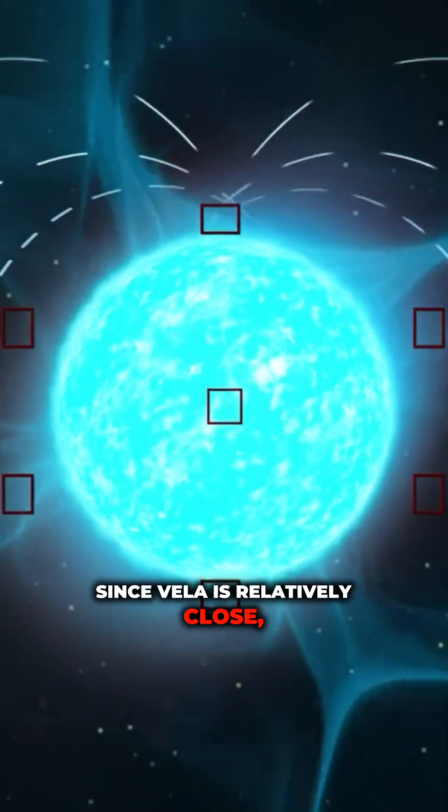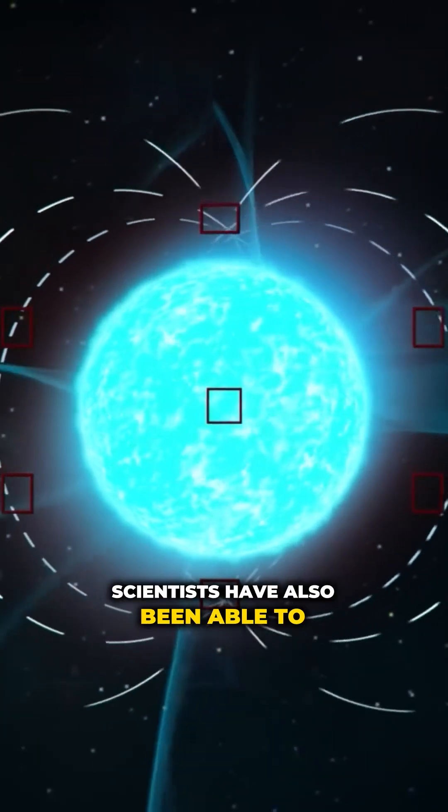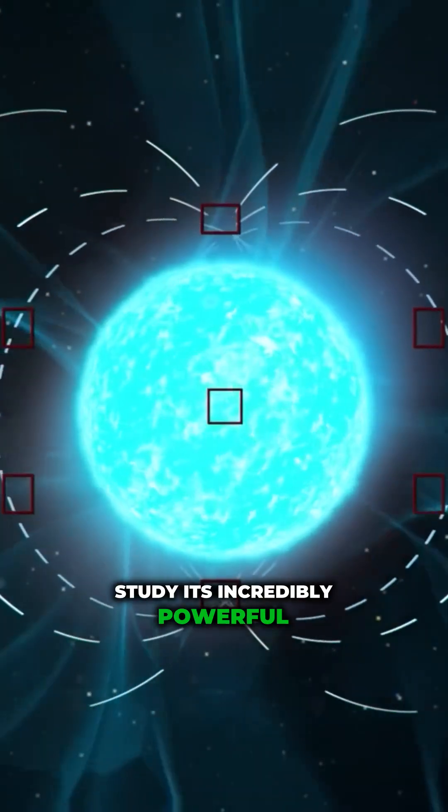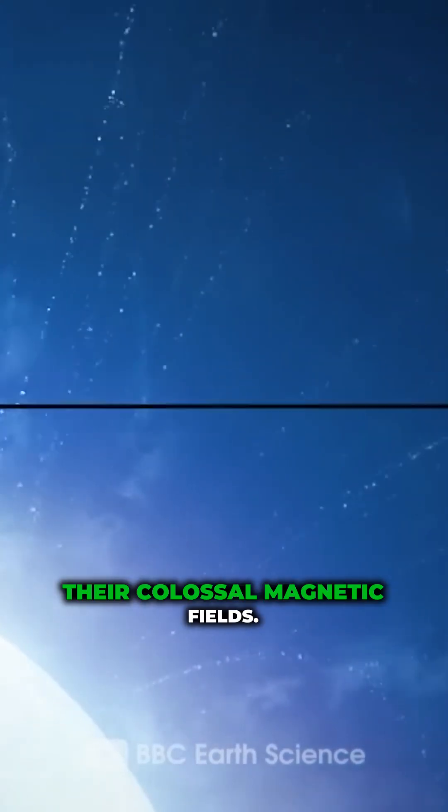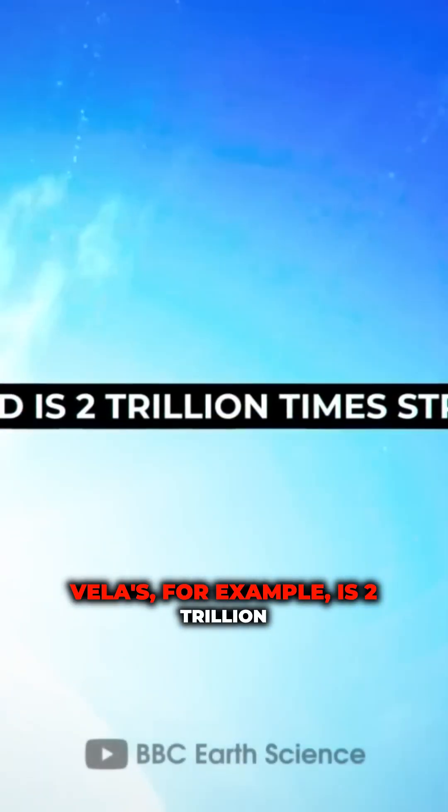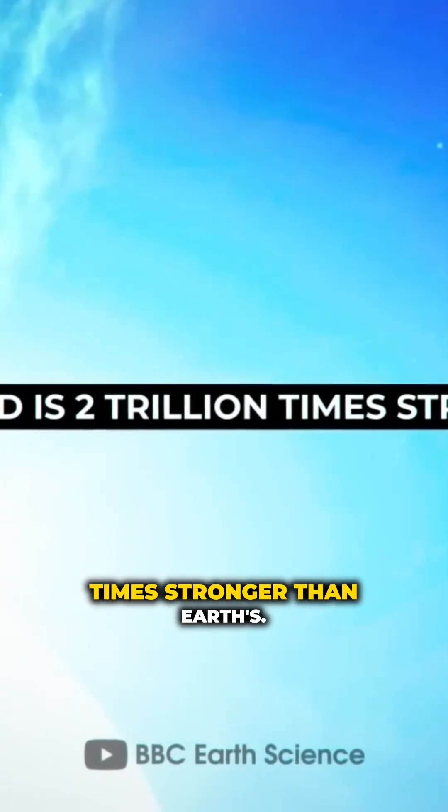Since Vela is relatively close, scientists have also been able to study its incredibly powerful magnetic field in detail. Neutron stars are known for their colossal magnetic fields. Vela's, for example, is 2 trillion times stronger than Earth's.